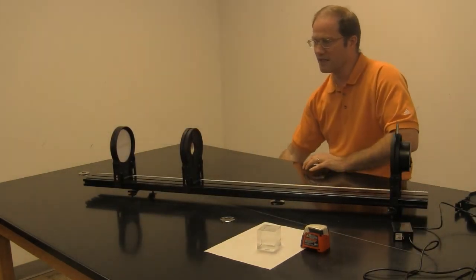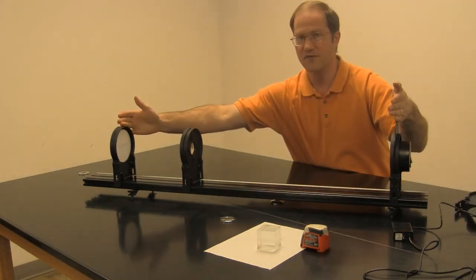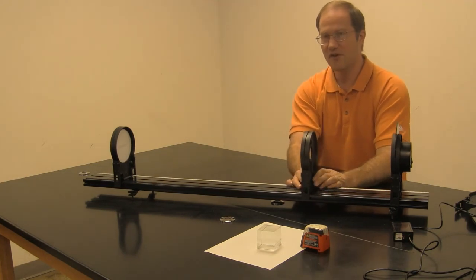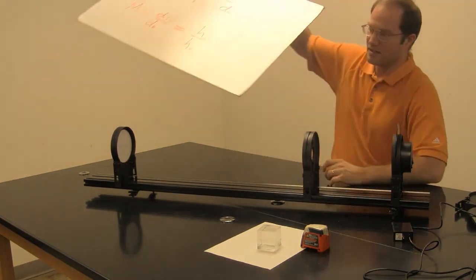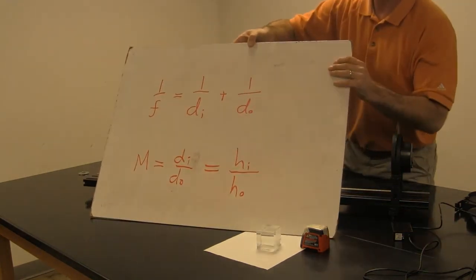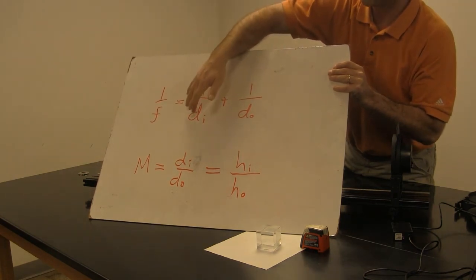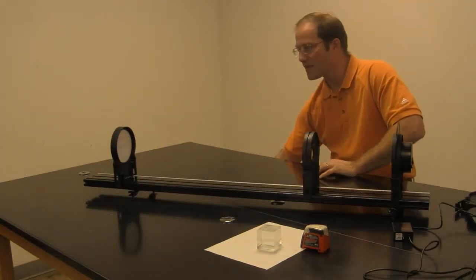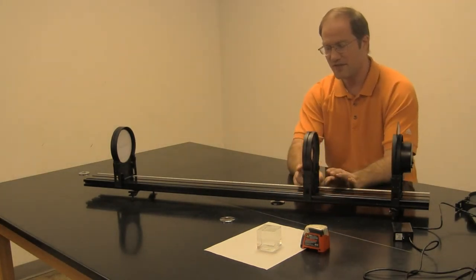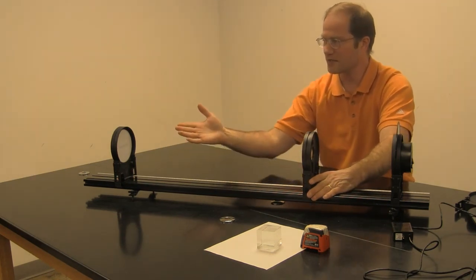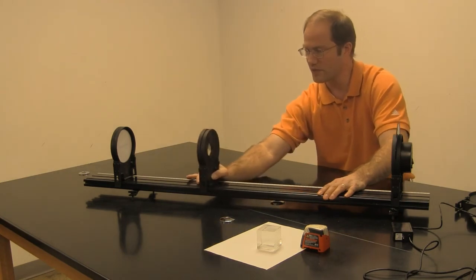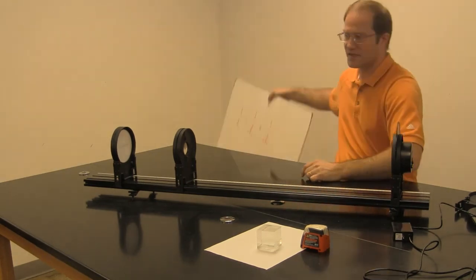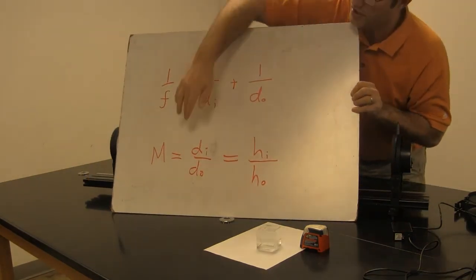When you have a lens setup like this where the object and the image are at a fixed distance apart, there are exactly two positions of the lens that can create a focused image here at the screen. That's when DI or DO are at certain values. They're conjugates of each other, so it doesn't matter which is here or there, you still get a focused image on the screen. The difference is the magnification. If we have the lens here and project it onto the screen there, the magnification is going to be different than if we find another position where we get a focused image on the screen. It's going to give a totally different magnification.